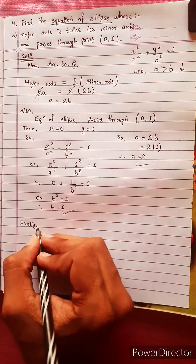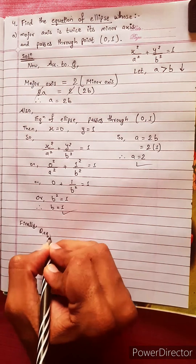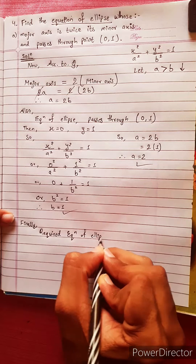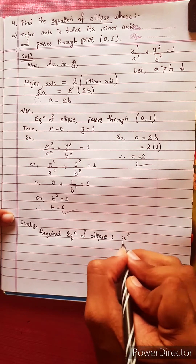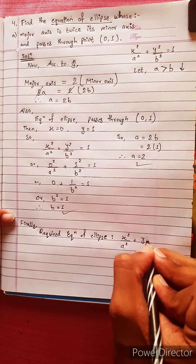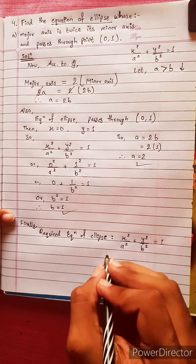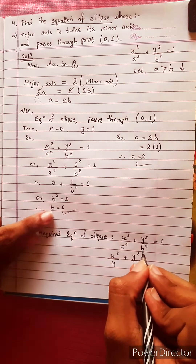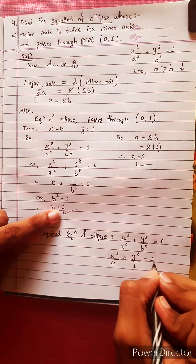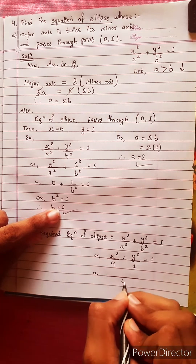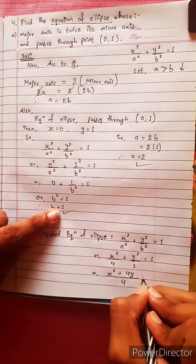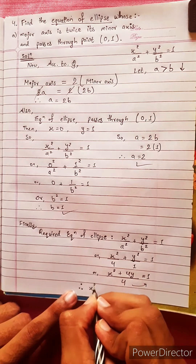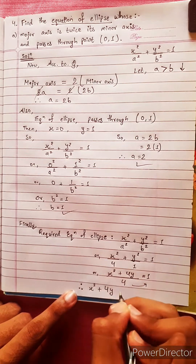Finally, the required equation of the ellipse is x squared by a squared plus y squared by b squared equals 1. Substituting a squared equals 4 and b squared equals 1, we get x squared by 4 plus y squared equals 1, or equivalently x squared plus 4y squared equals 4.